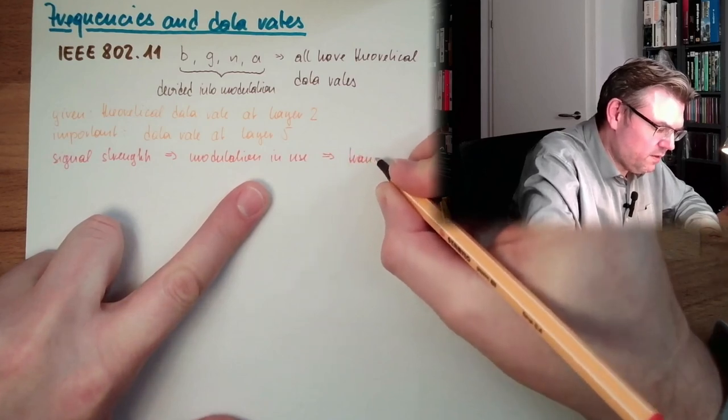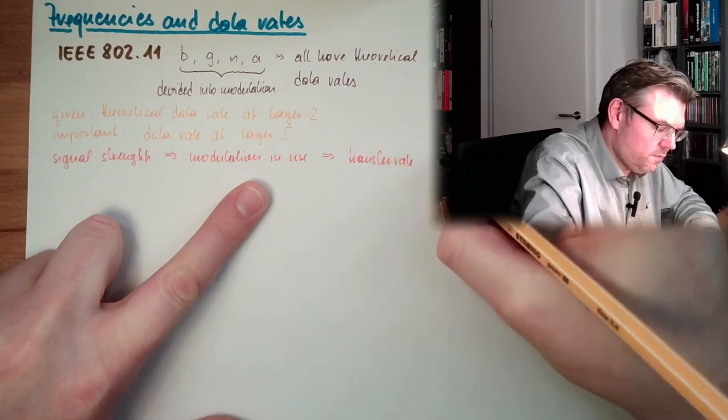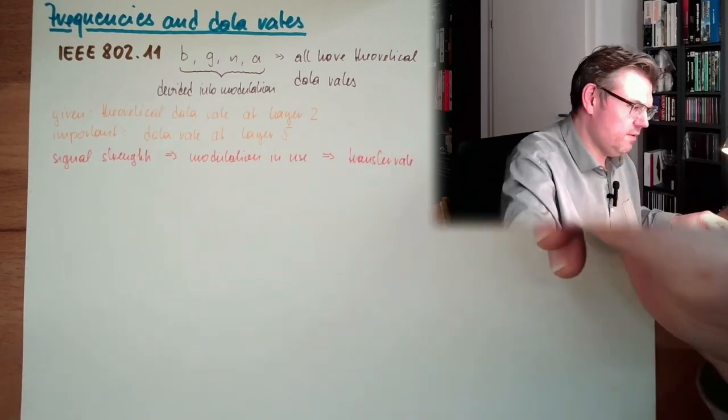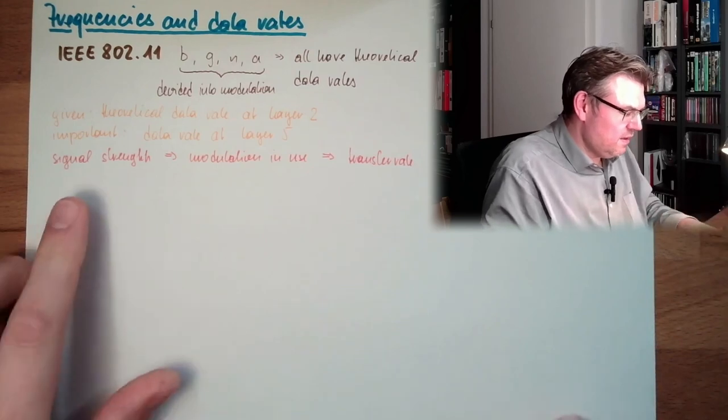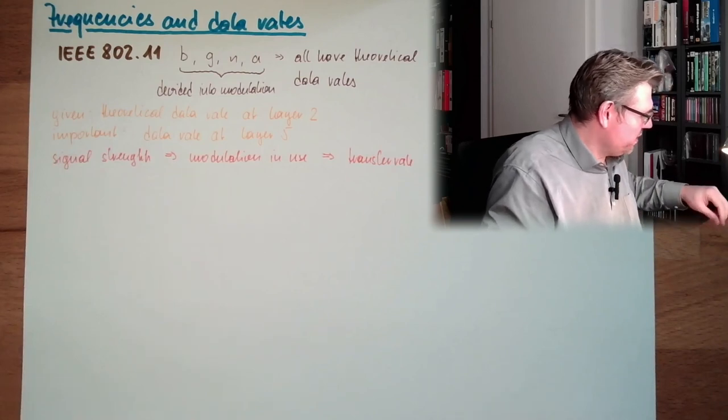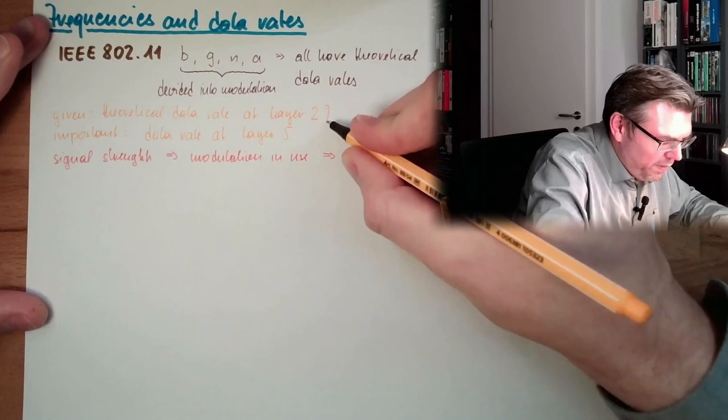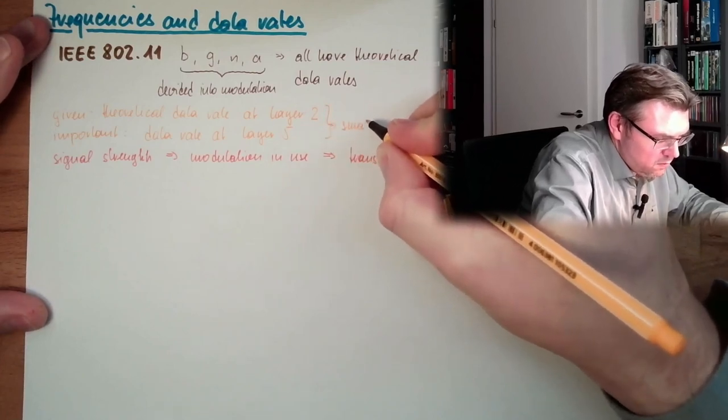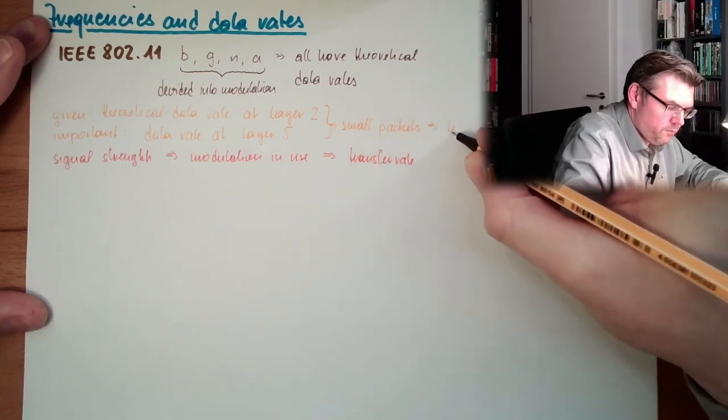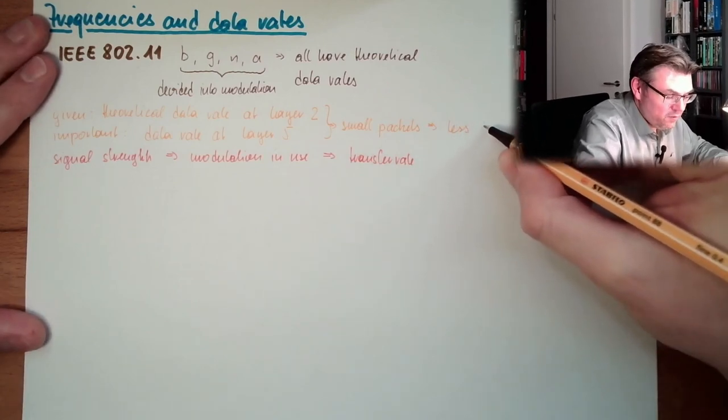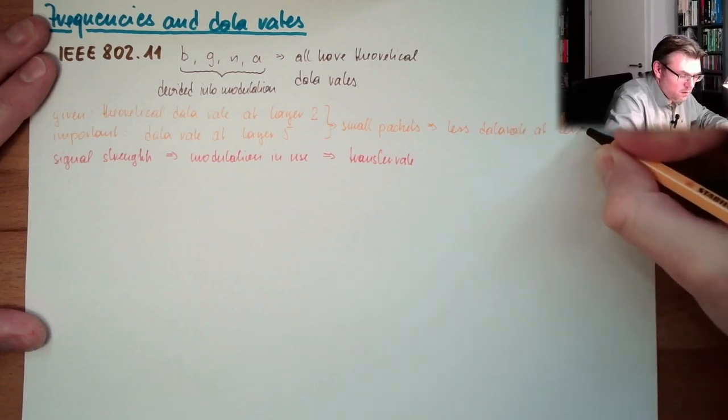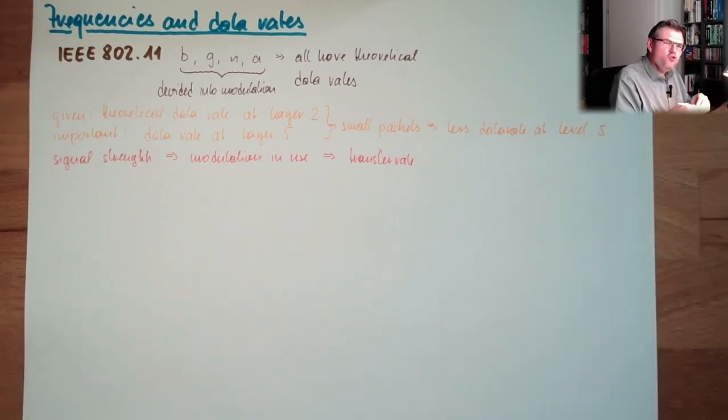The transfer rate: from the signal strength, modulation in use, to transfer rate. However, this also has to be taken into account because here we can see that if there are small packets, less data rate at level five. If I'm using a huge package...